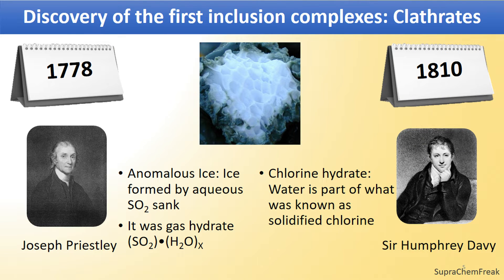In 1778, Joseph Priestley, an English scientist who discovered 10 gases including oxygen, observed that ice formed from an aqueous solution of sulphur dioxide sank rather than floating. This anomalous ice was a gas hydrate solid, one of the first discovered clathrates.